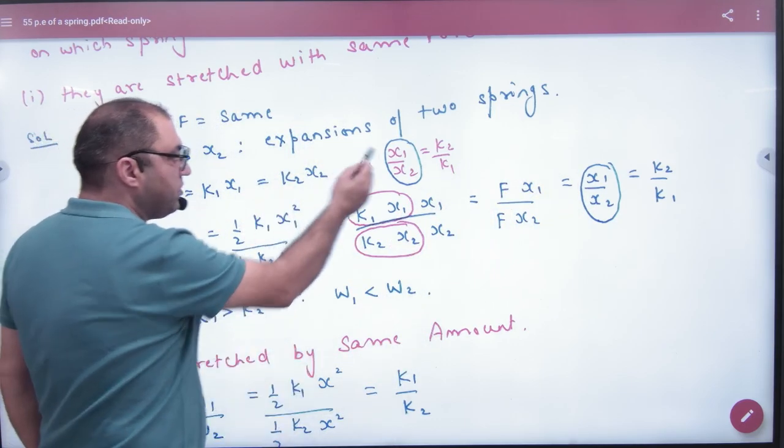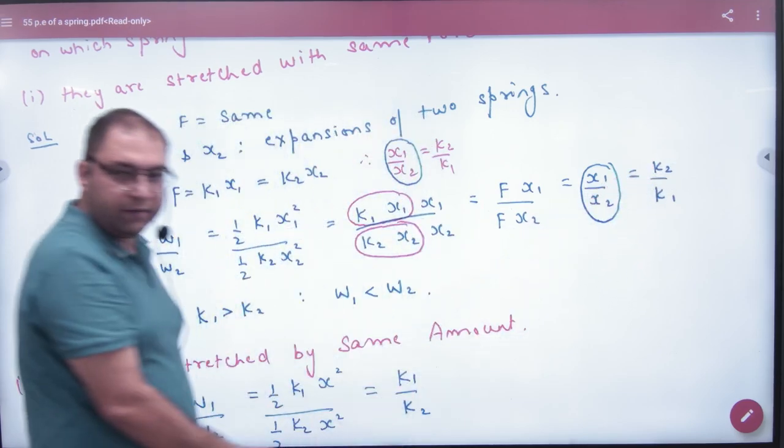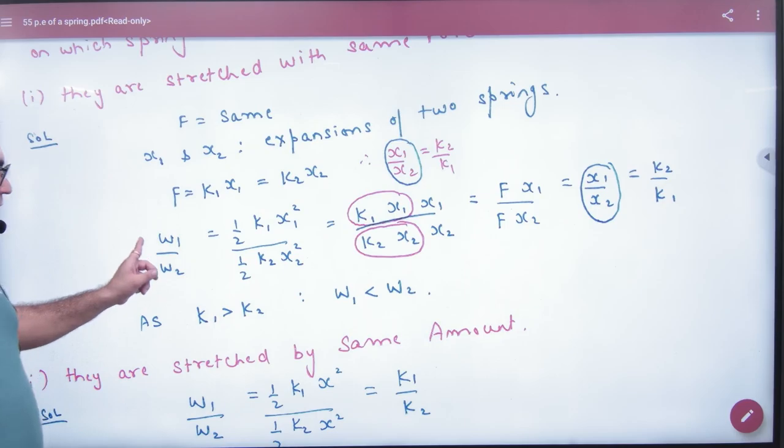Then check it out: K1 is big, K2 is small. The fraction is less than 1, so obviously W2 will be greater than W1.